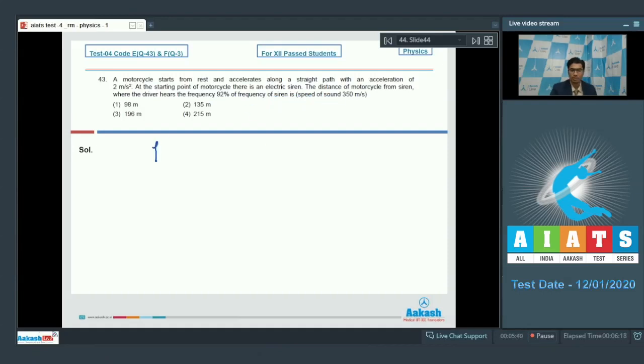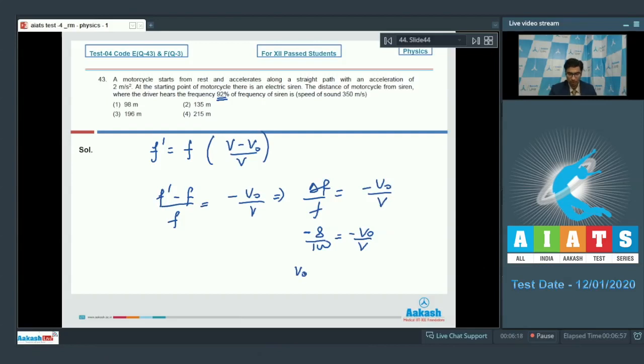Dear students, the apparent frequency f' can be written as f multiplied by v minus v0 by v, where v is the speed of sound and v0 is the speed of observer. Herein, we can also write that f' minus f by f will be equal to minus v0 by v. Therefore, delta f by f would be equal to minus v0 by v. The apparent change in the frequency in the percentage terms is 8 percent. So this will be equal to minus 8 by 100. This will be equal to minus v0 by v. Therefore, v0 will be equal to 350 into 8 by 100, which will be equal to 28 meter per second.